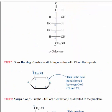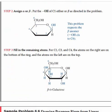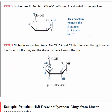For C3 in the Fischer projection, hydroxyl is on the left. So in the Haworth, hydroxyl goes above the plane and hydrogen below the plane of the ring for C3.